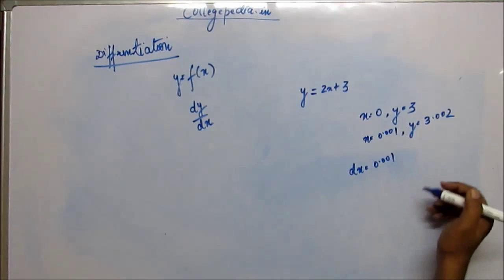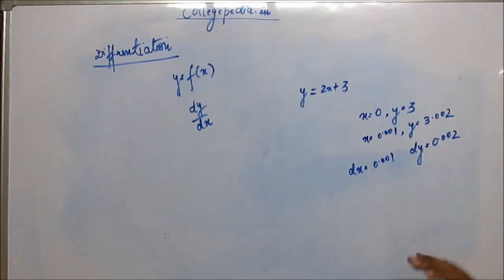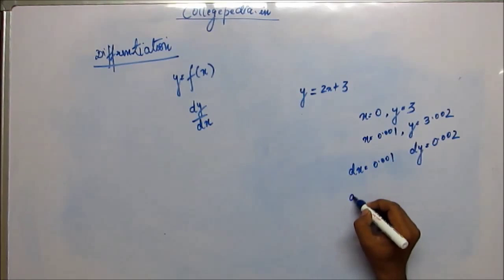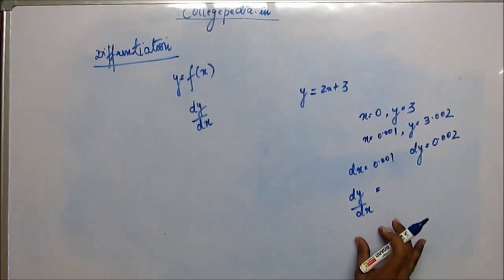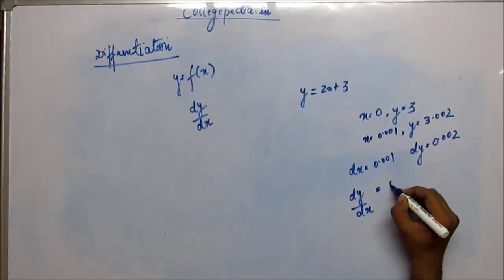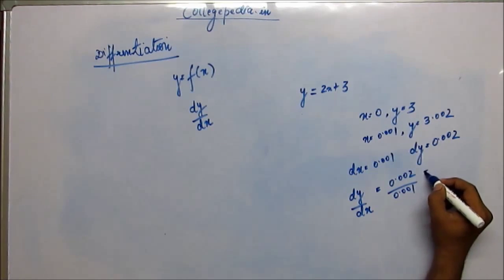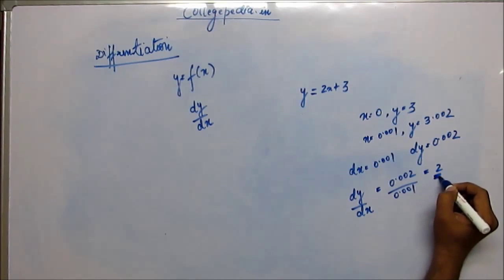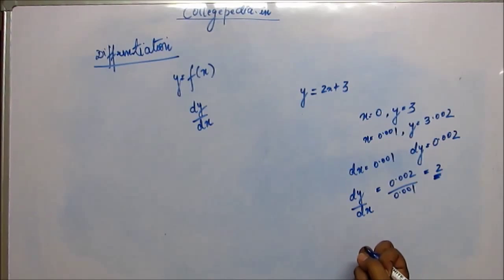dx is the change in x; dy is the change in y. Here dy is 0.002. Now if you have to calculate change in y with respect to x, that means dy/dx — when you are changing x by a certain amount, by what factor is y changing? dy here is 0.002, dx here is 0.001, so dy/dx is actually 2. dy is change in y, dx is change in x, so dy/dx is change in y upon change in x.